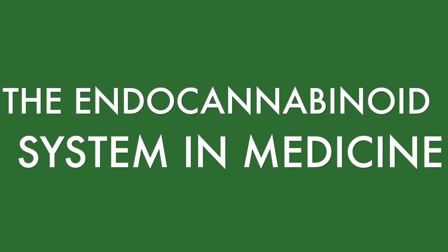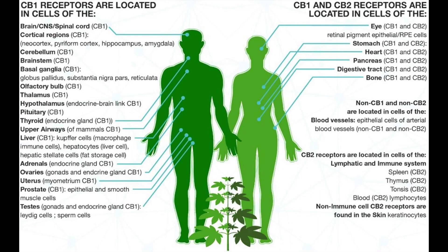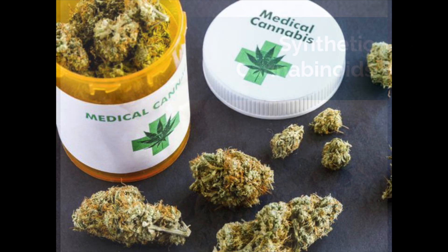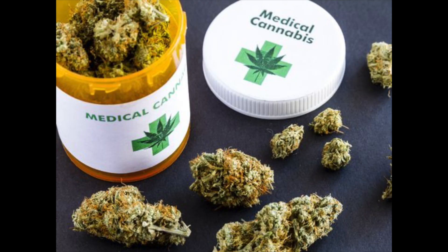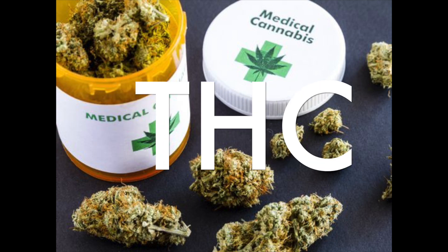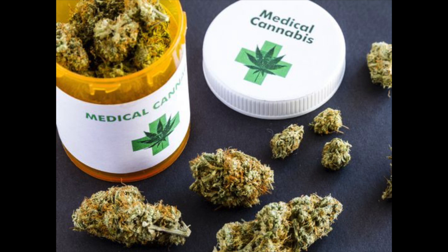The endocannabinoid system in medicine: due to its widespread effects in the human body, the endocannabinoid system is believed to hold promise in treating many diseases and conditions. In recent years, scientists have been exploring various ways of targeting this system. There are currently two major ways: medical marijuana and synthetic cannabinoids. Medical marijuana is the most common way of targeting the endocannabinoid system to treat various illnesses. Compounds in marijuana including THC and CBD are known to produce therapeutic effects by interacting with the endocannabinoid system.